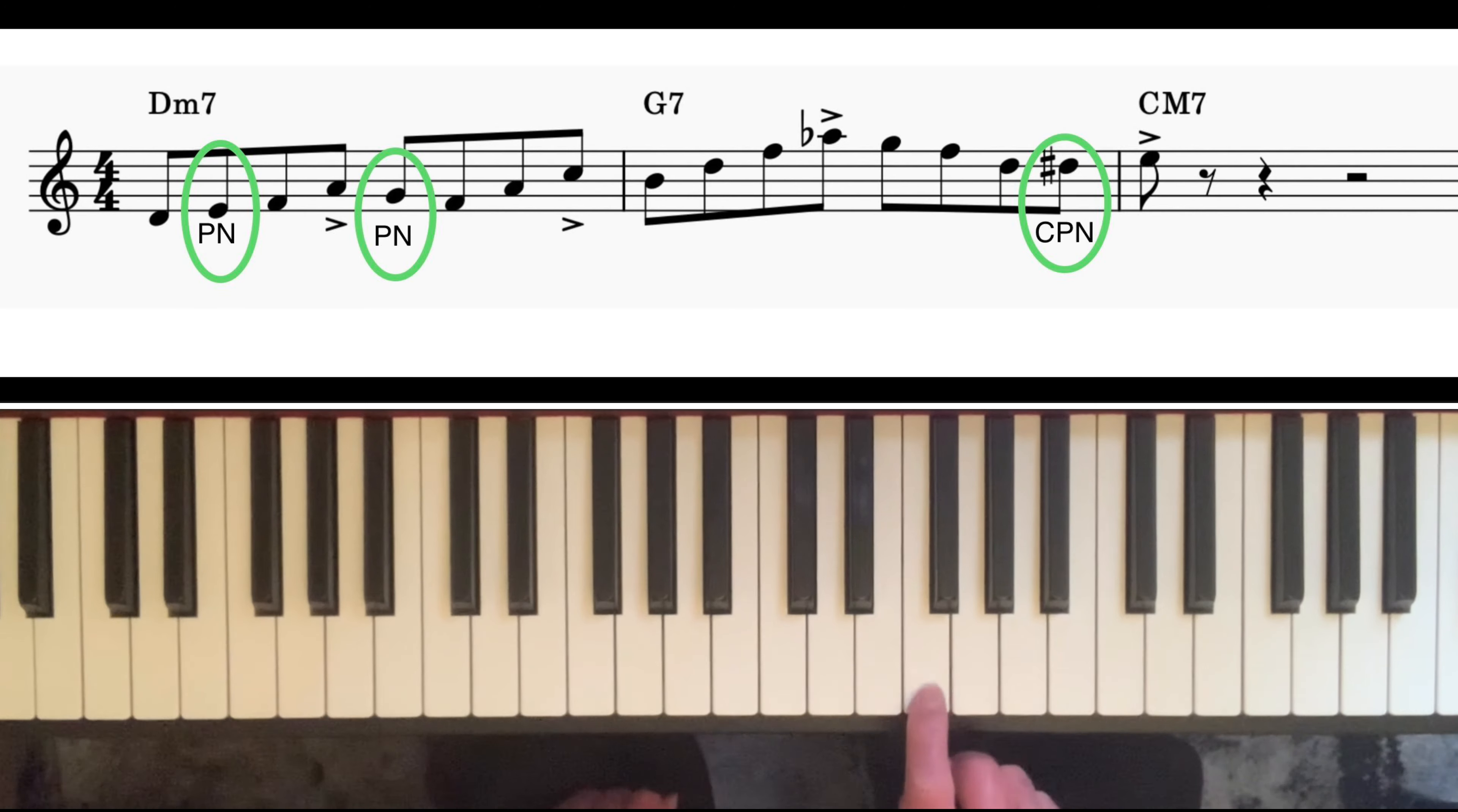I'm outlining the third, the fifth, and the seventh of D minor seven, and I've got that one passing note G in between the third and the fifth. So that's the first bar. I end up on the seventh of D minor seven—C is the seventh...